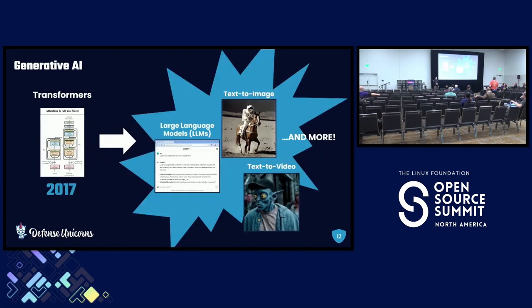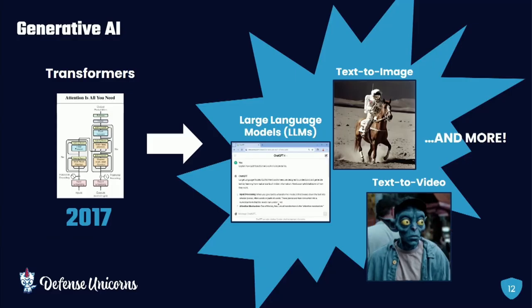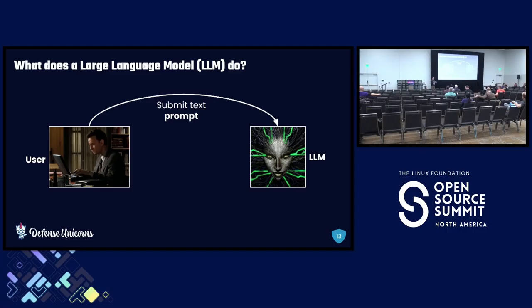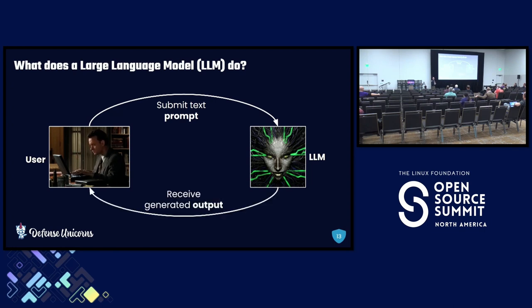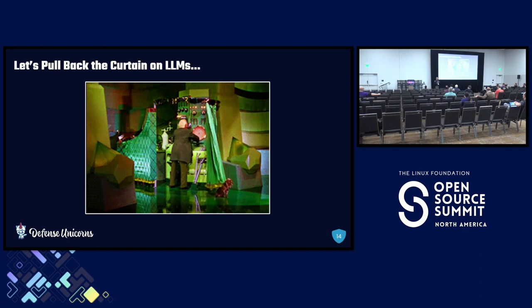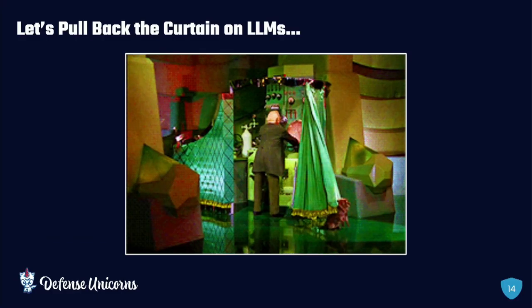So let's talk about large language models specifically. In super simple terms: as a user, you're able to submit a text prompt in natural language — type a message like you were typing it to your friend — and then the large language model takes that and generates an output response back to you. You can continue the conversation over and over; it maintains context. So it's effectively a chatbot. It can seem kind of magical, so now let's take a little peek behind the curtain to see how that chatbot imitates the natural language response you might see from a human.